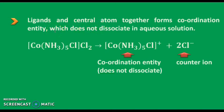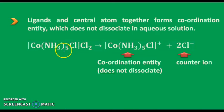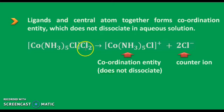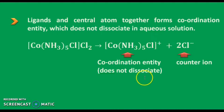This coordination entity does not dissociate in aqueous solution. But the Cl⁻ ions that are outside the square bracket are called counter ions. Here, 2 Cl⁻ are the counter ions.